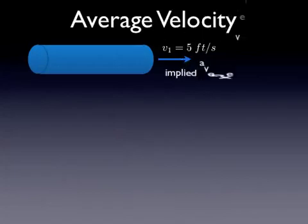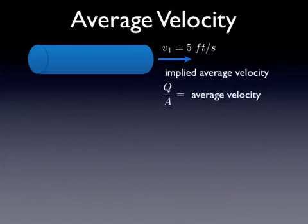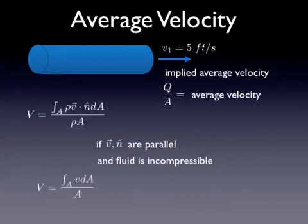So we're dealing with implied average velocities. I also want to point out that if you calculate velocity from q over a, that's absolutely an average velocity is what you're calculating. But what if you actually know the velocity distribution and you want to calculate the average velocity? You could do that with this equation, which is similar to the alpha equation. We're going to do the same simplification and then it reduces to the average velocity as the integral over the control surface of the local velocity divided by a.